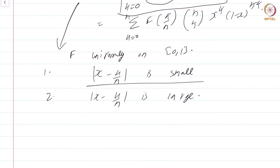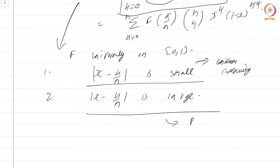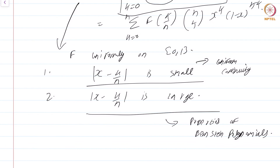For the first part — where |x − k/n| is small — uniform continuity of f suffices, since f is continuous on a closed interval and hence uniformly continuous. For the second part — where |x − k/n| is large — we need some special properties of Bernstein polynomials. All of this will be made rigorous; the proof is self-contained. In the next module, we prove the basic identities of Bernstein polynomials needed for the final proof.